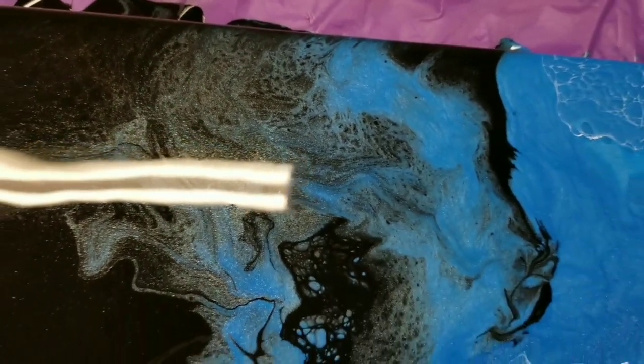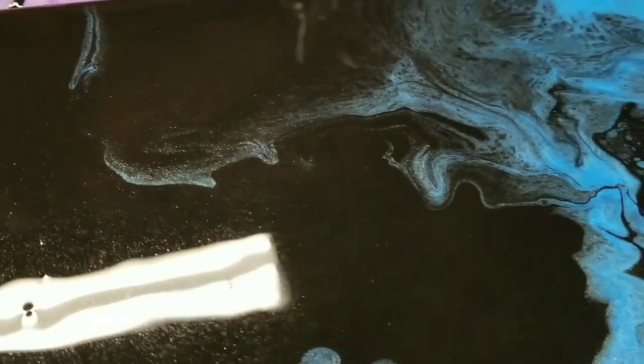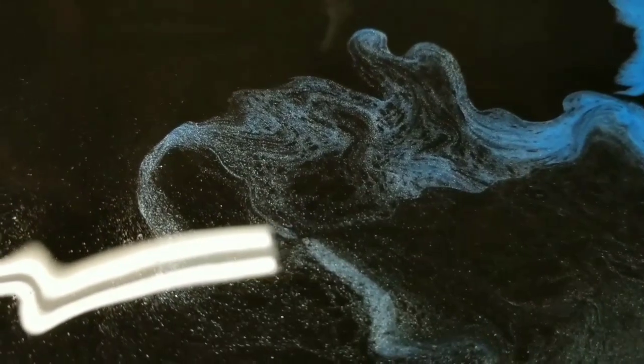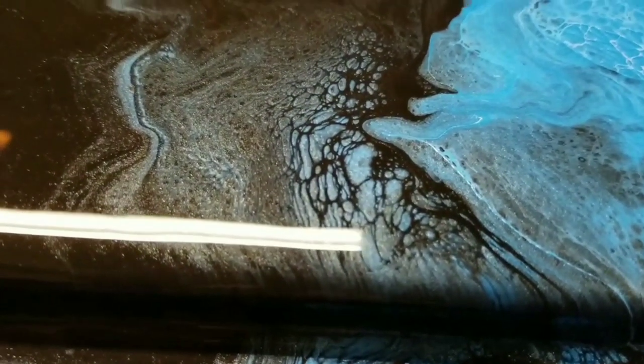then we get into the black, which I love how the blue and the black collide, especially since the blue is metallic. So it gives it this sheen on the black there, if you can see that. And then we've got some really cool cells down here as well.